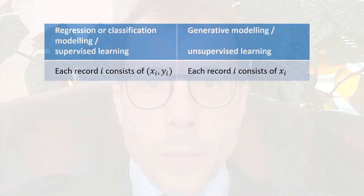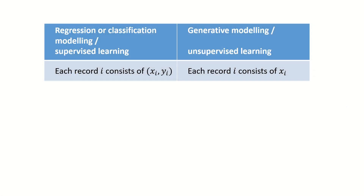This should feel pretty much like what we did in the last video for generative modelling. The basic difference is that in supervised learning we have a data set of pairs (xi, yi), whereas in generative modelling we just have unlabeled data points xi. In both cases we invent a probability model with unknown parameters theta and assume records are independent samples.